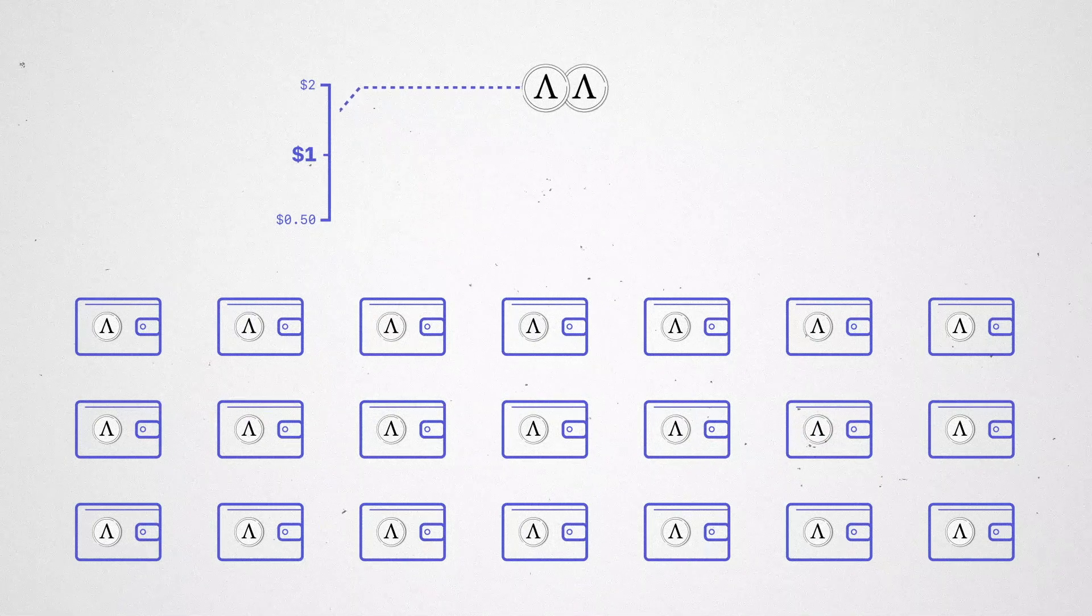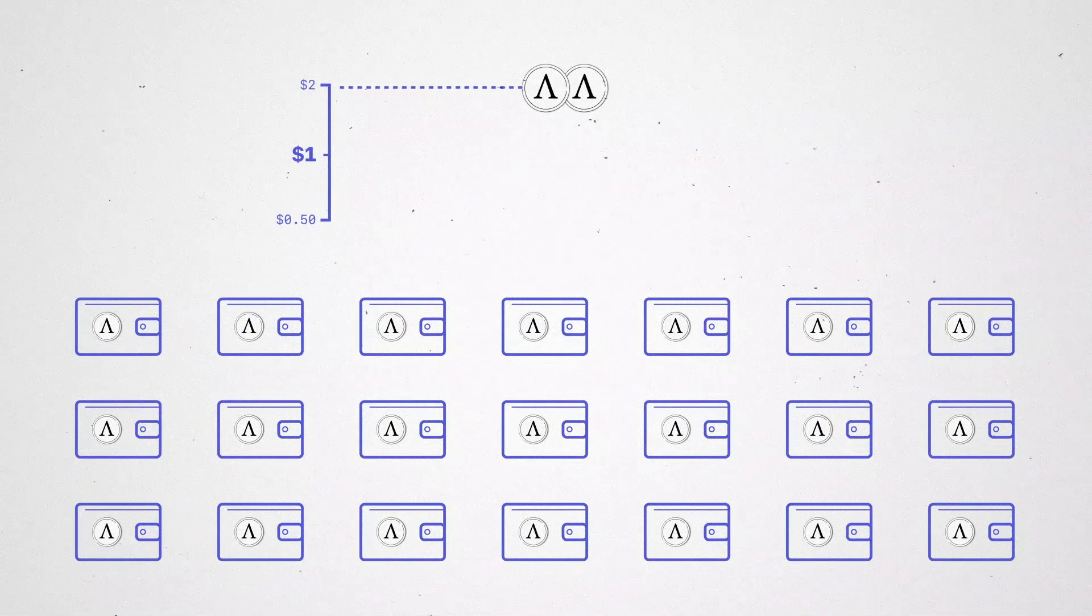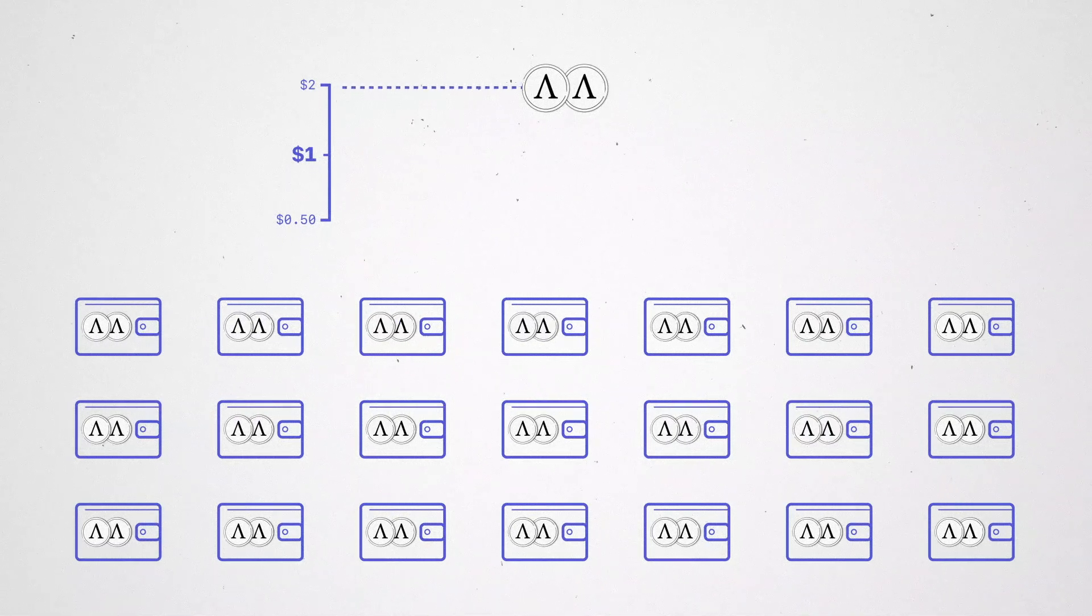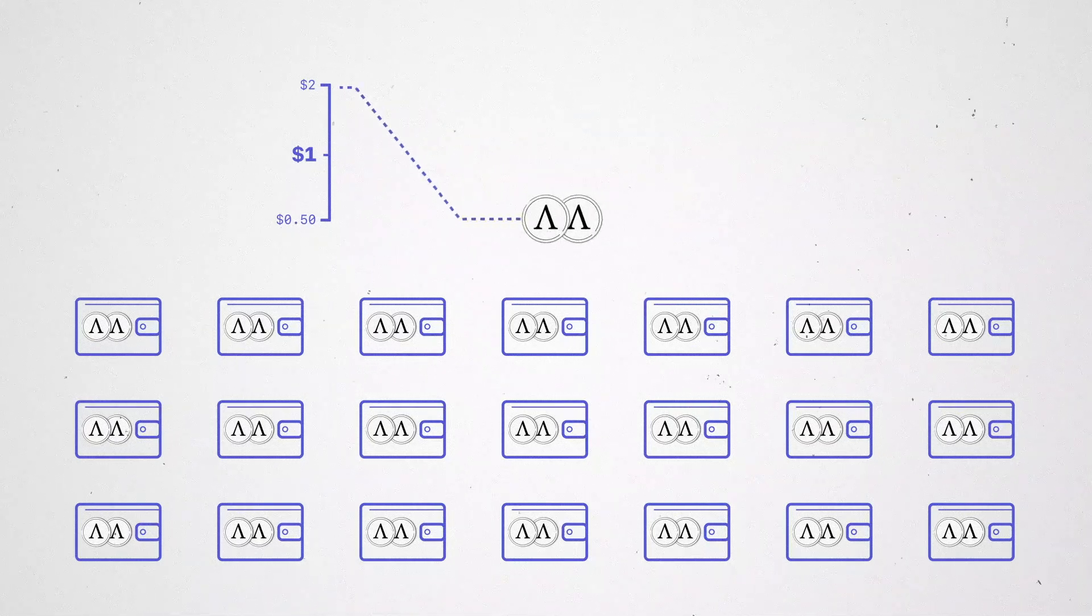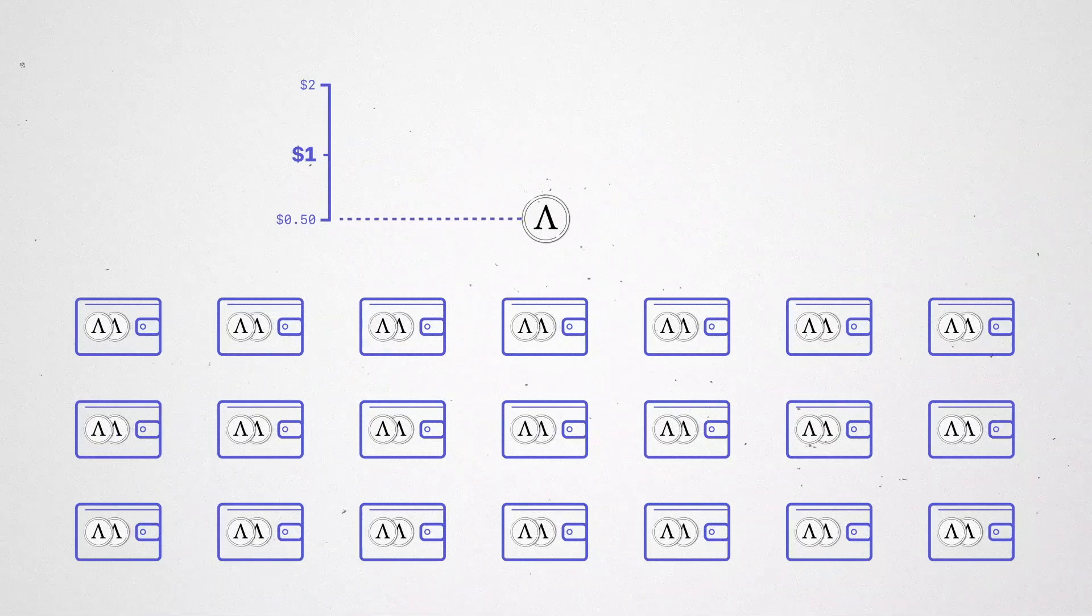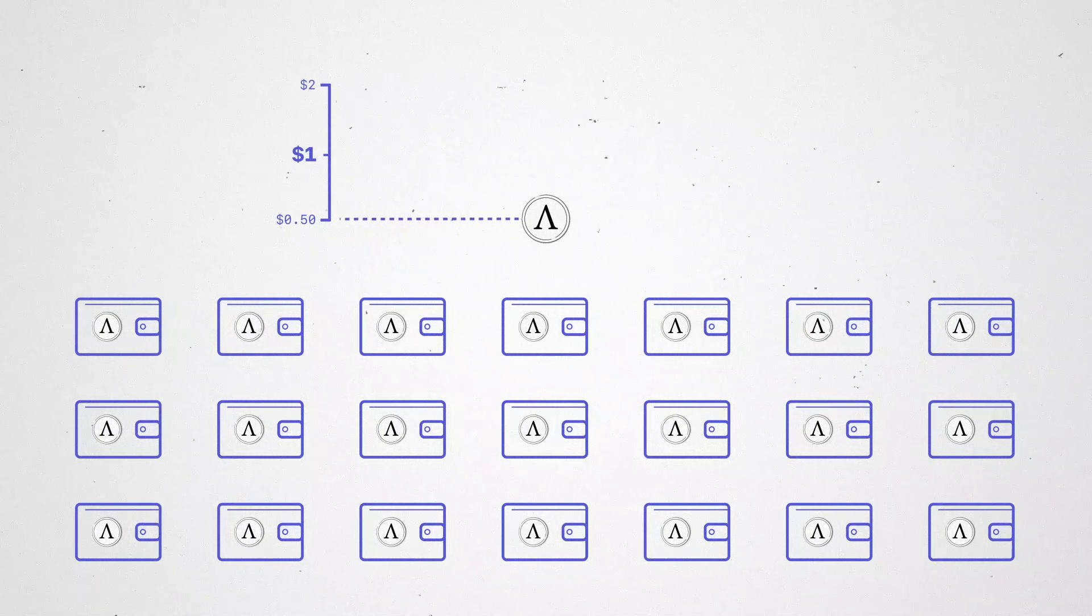It follows a simple set of rules. When the price exchange rate of Ample is greater than $1, the number of Amples in all user wallets increases proportionally. When the price exchange rate of Ample is less than $1, the number of Amples in all user wallets decreases proportionally.